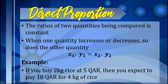Another example: if you buy two kilograms of rice at five katarials, then you expect to pay ten katarials for four kilograms of rice. As you can see, if the number of kilograms of rice increases, so does the price of the rice.